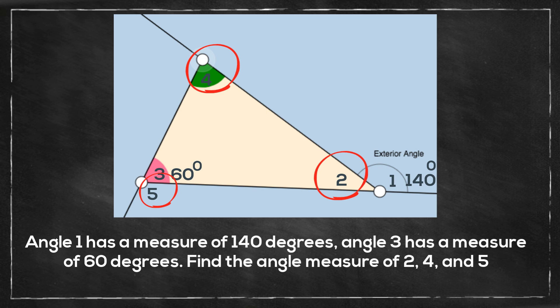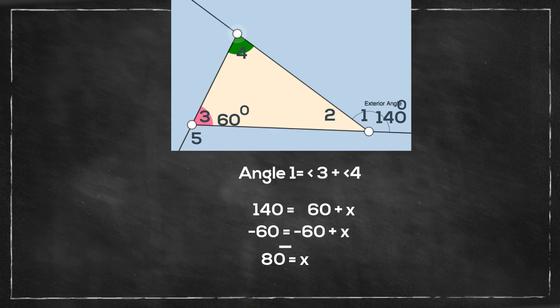Okay, let's first look at angle 4. We know that angle 1 is equal to angle 3 plus 4. So we can set up an equation in which 140 is equal to 60 plus x. Subtract 60 from each side and that gives you the angle measure x is equal to 80. So angle 4 is equal to 80 degrees.